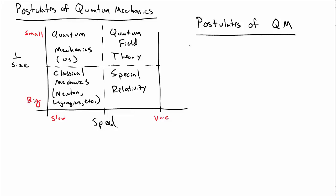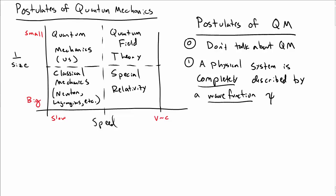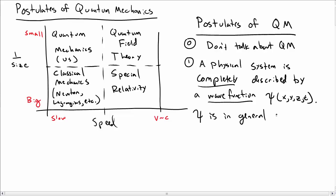In this video I want to talk about the postulates of quantum mechanics. The zeroth postulate is that you don't talk about quantum mechanics. The first postulate is that a physical system is completely described by a wave function — by completely, we mean everything about the system is described by the wave function, there's nothing hidden. We call that psi of x, y, z, and t. Psi is in general a complex function, so we're going to have to work with complex numbers.